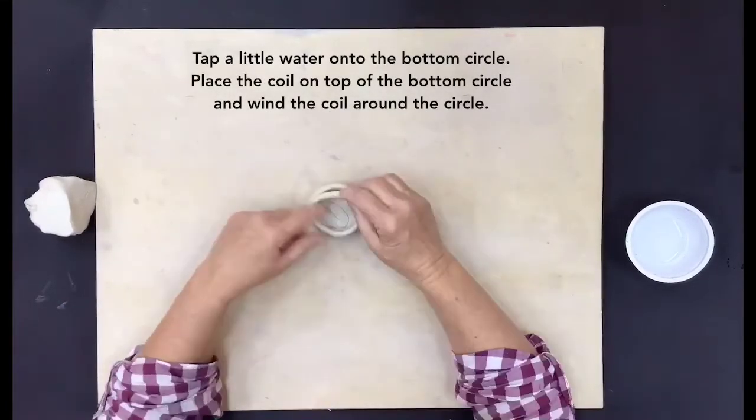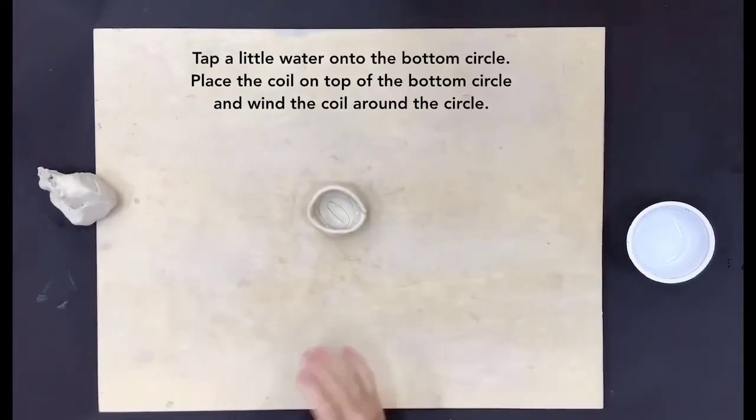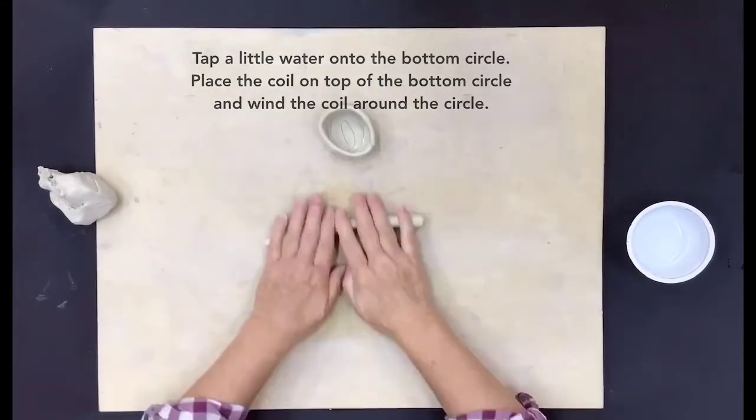Tap a little water onto the bottom circle. Place the coil on top and wind the coil around the circle.